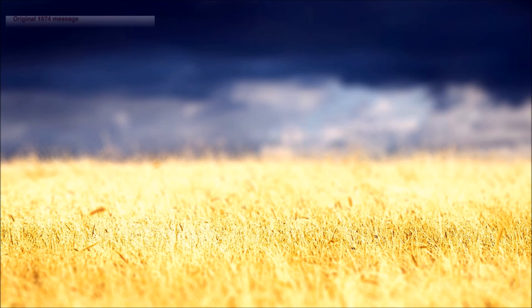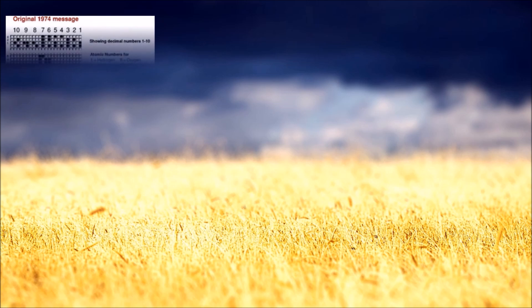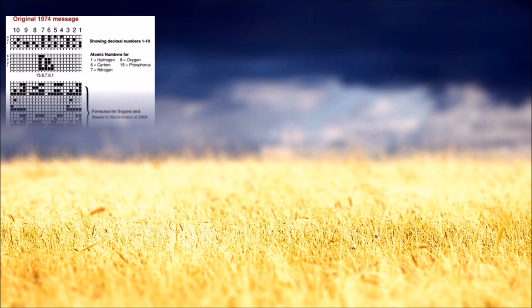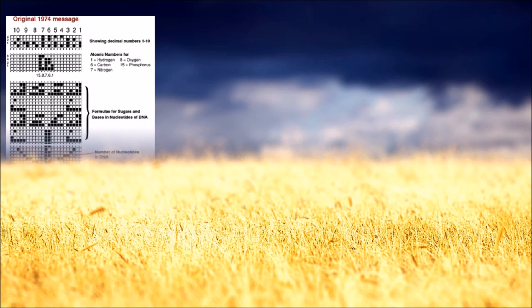Number one, the numbers 1 to 10. Number two, the atomic numbers of the elements hydrogen, carbon, nitrogen, oxygen, and phosphorus, which make up deoxyribonucleic acid, our DNA. The formulas for the sugars and bases in the nucleotides of DNA. Four, the number of nucleotides in DNA and a graphic of the double helix structure of DNA.